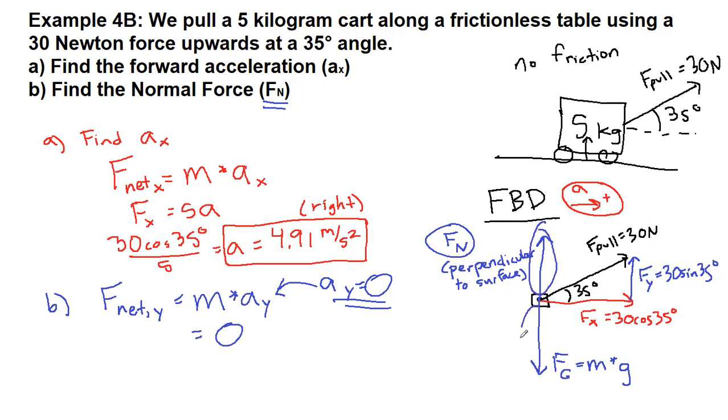Now we look and we see how many arrows point in the up and down direction. We have the normal force, we have the force of gravity, and we have the y component of our pull. We need to include all of those when we write out the net force in the y direction. The key thing here is that forces with the same sign or same direction as each other will get the same sign, and forces that point in the opposite direction will get the opposite sign.